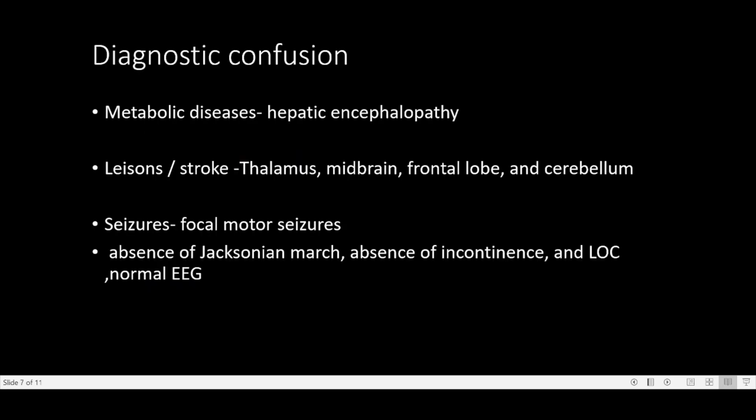Limb shaking TIAs often cause diagnostic confusion. The most commonly mistaken condition is focal motor seizure, and it is very difficult to differentiate from it. But with a normal EEG, absence of Jacksonian march, and absence of incontinence or loss of consciousness, we can differentiate it. It can even resemble tremors due to lesions or stroke in the thalamus, midbrain, etc., and it can sometimes be confused with asterixis.